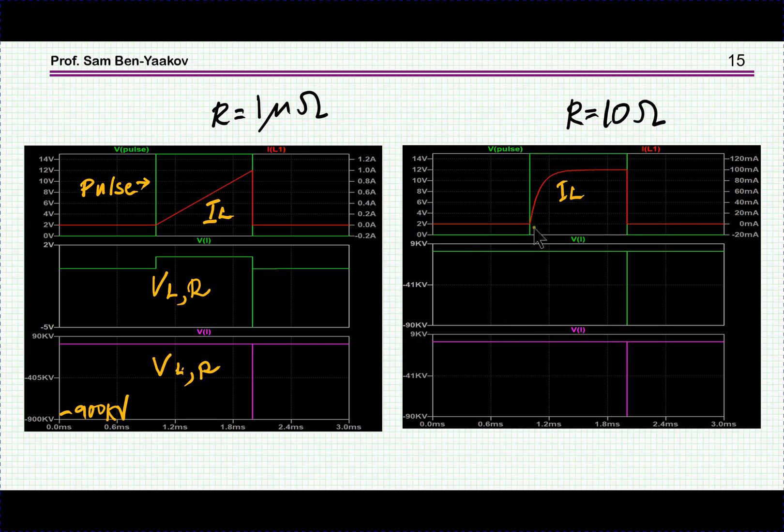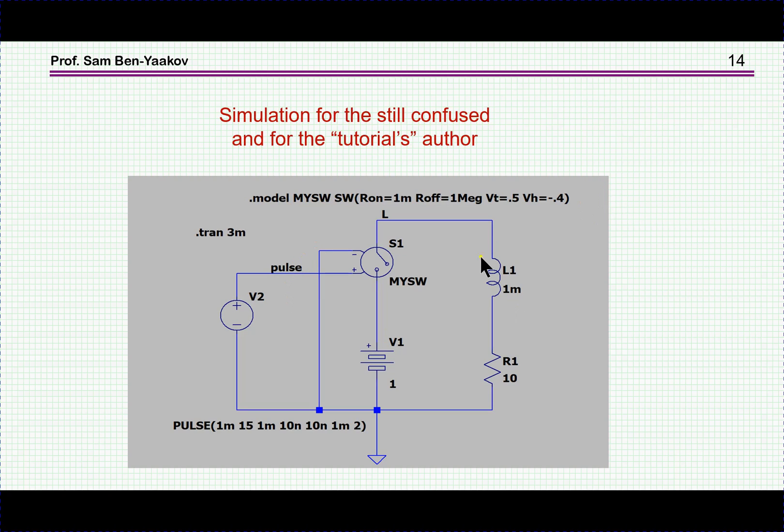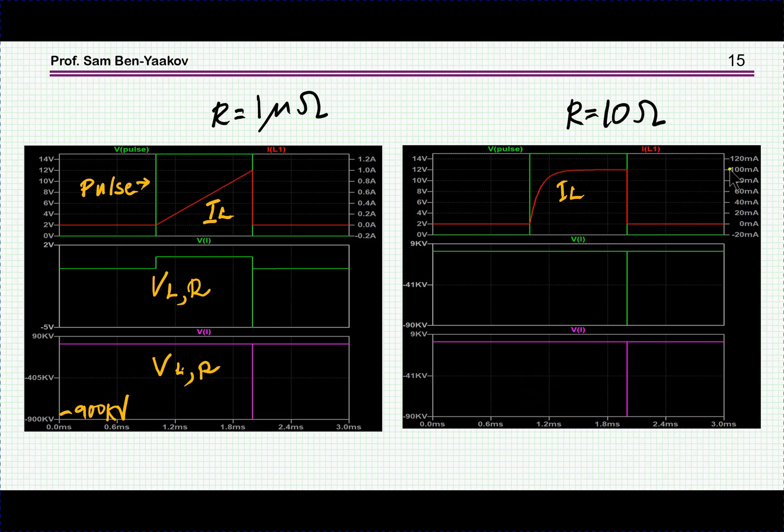Now what about the case of a resistor? That is, there is a resistor, 10 ohms in this case. Obviously there'll be an exponential increase, and if the time constant is such that it will reach steady state, so to speak, then the value here will be of course the voltage divided by the resistance. So it will be 100 milliamps. Here it is, 100 milliamps.